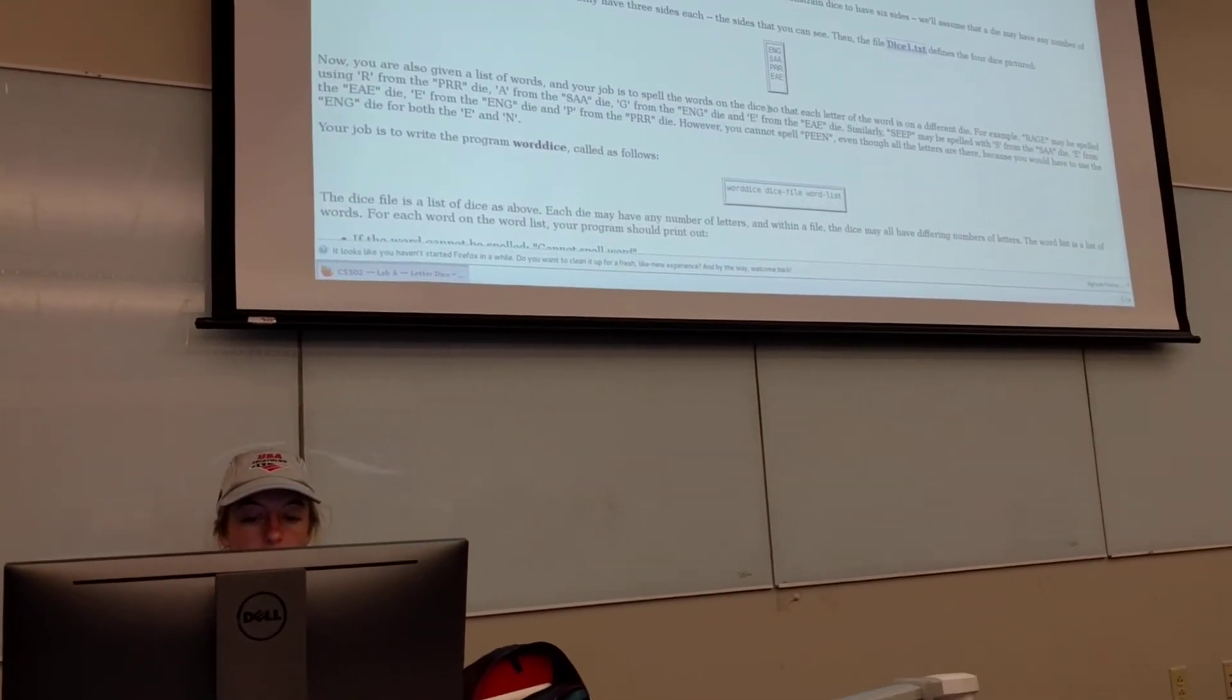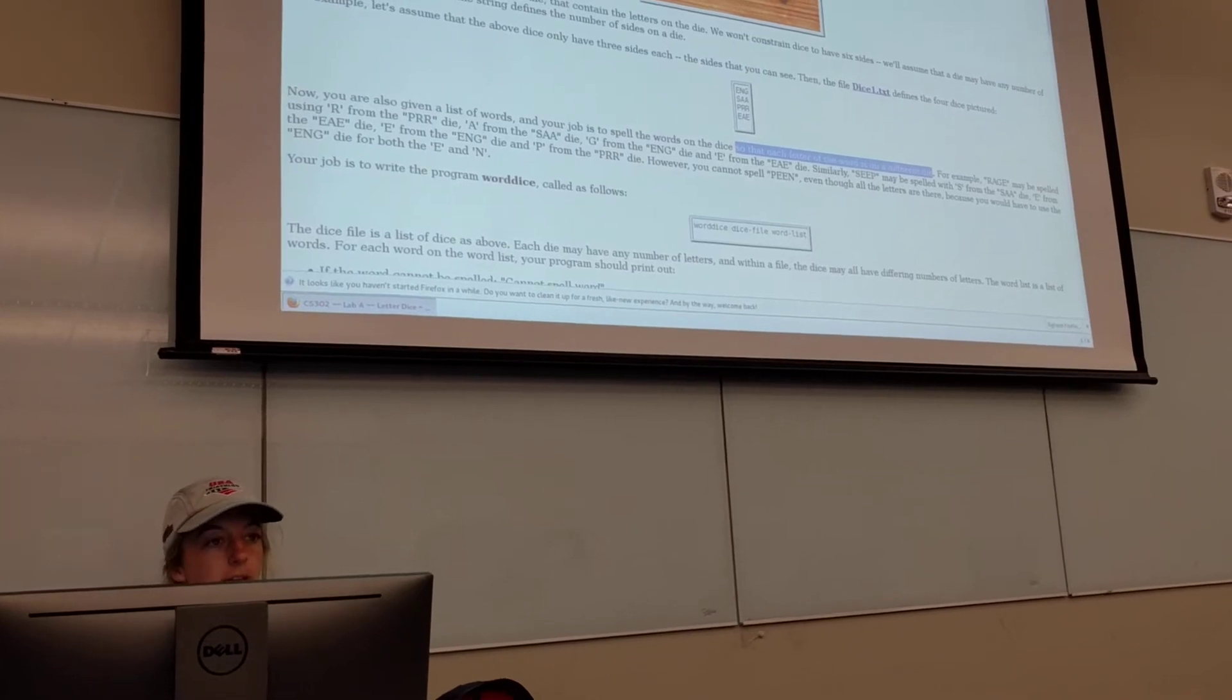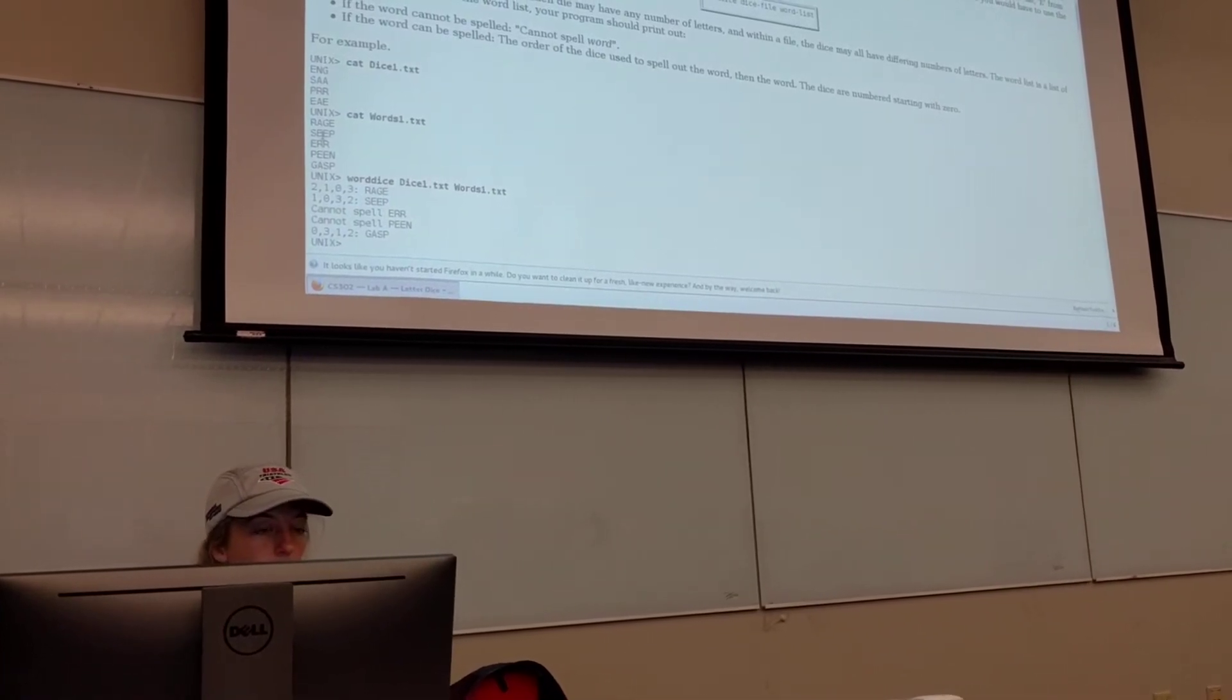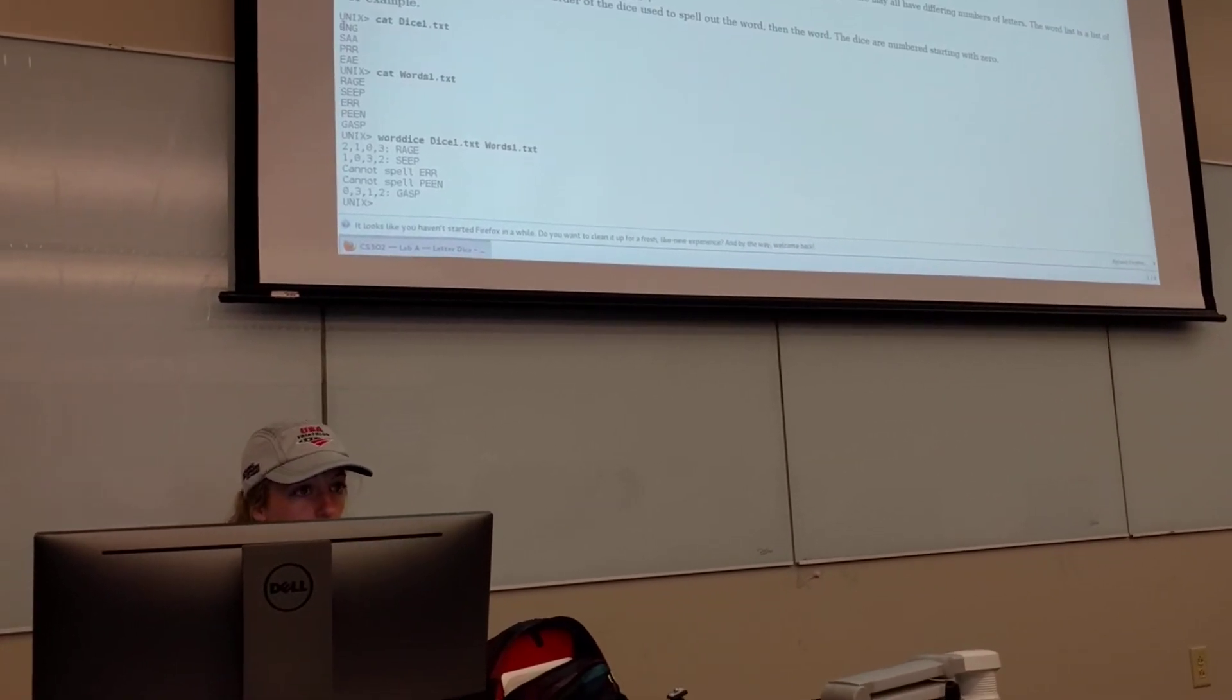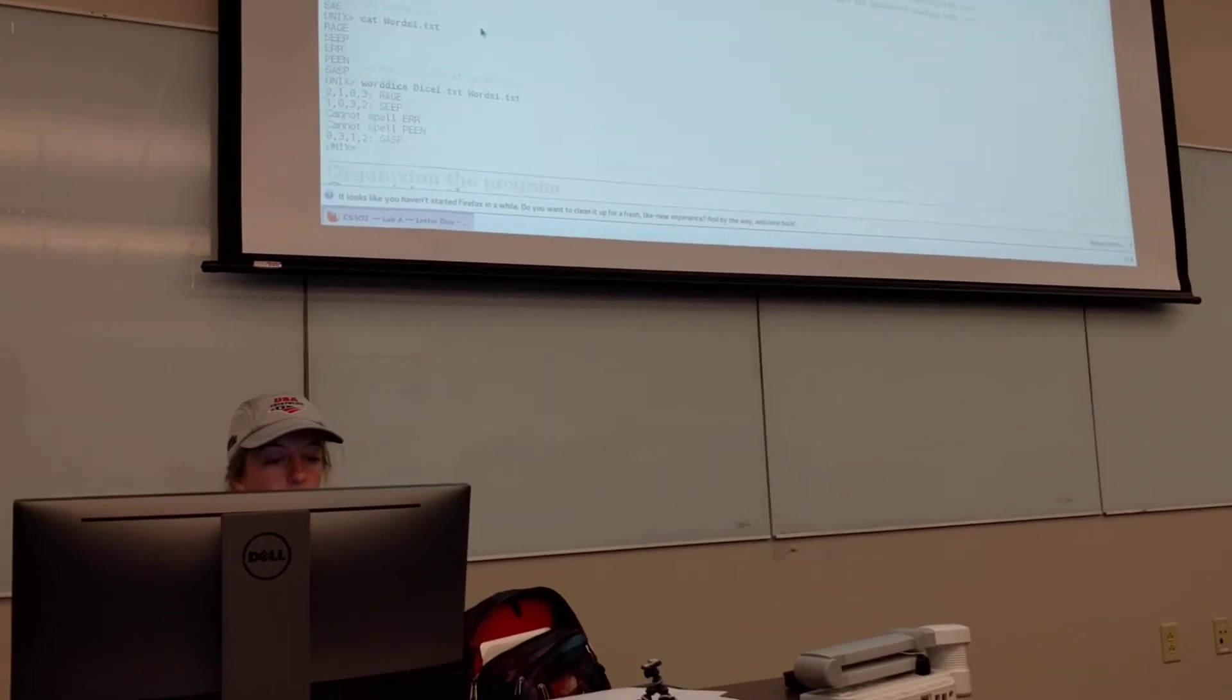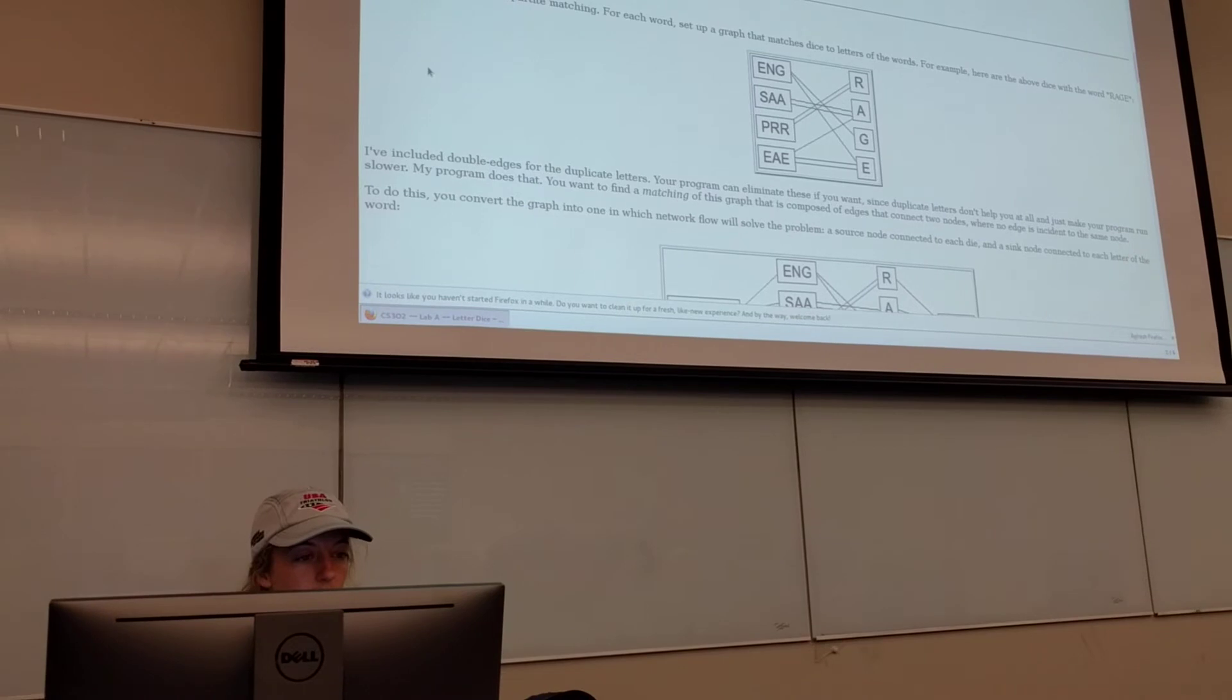Remember you can only use one die per letter. Each letter of the word is on a different die. So we couldn't use, for example, seep. You can't use the same die if you only had one die that had an E on it. You couldn't use that E twice. It seems simple enough, but it's actually a little more difficult to solve. And we use network flow to solve it.